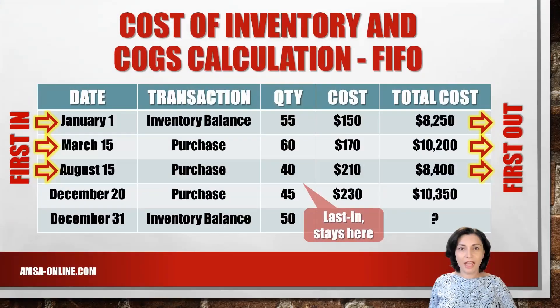Now the question is: which costs do we use for our 150 units sold during the year? The answer depends on which inventory costing method is used. Let's start with the first-in, first-out or FIFO method. Under the FIFO method, the first units purchased are assumed to be sold first, and the ending inventory is made up of the most recent purchases.